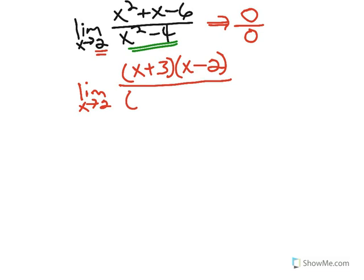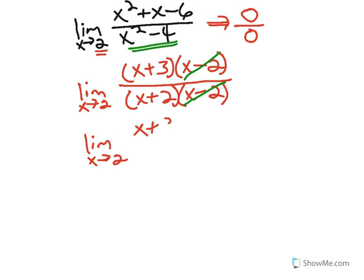And the denominator becomes x plus 2, x minus 2. And we can see now that we have a common factor in the numerator and denominator, so I can divide those out. We'll divide out the x minus 2s, and that leaves me now with the limit as x approaches 2 of x plus 3 over x plus 2.